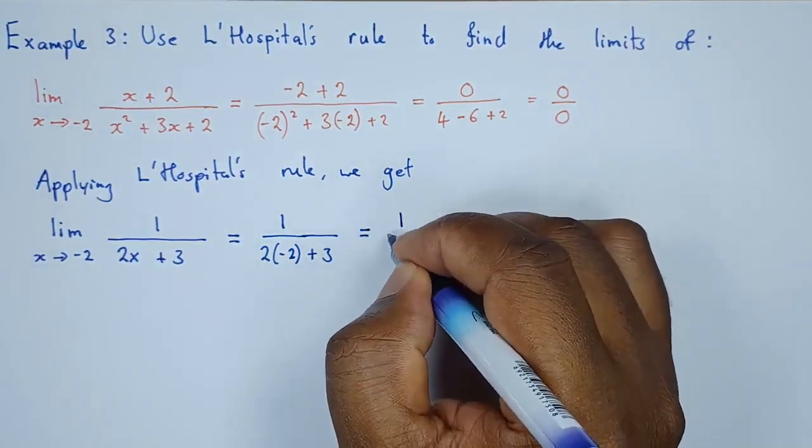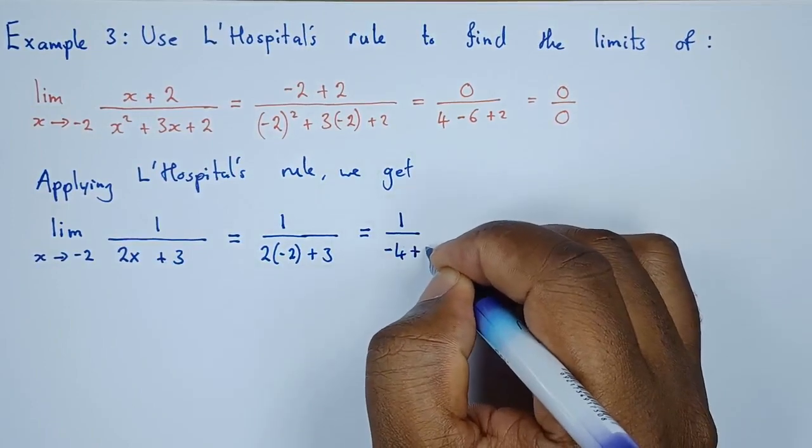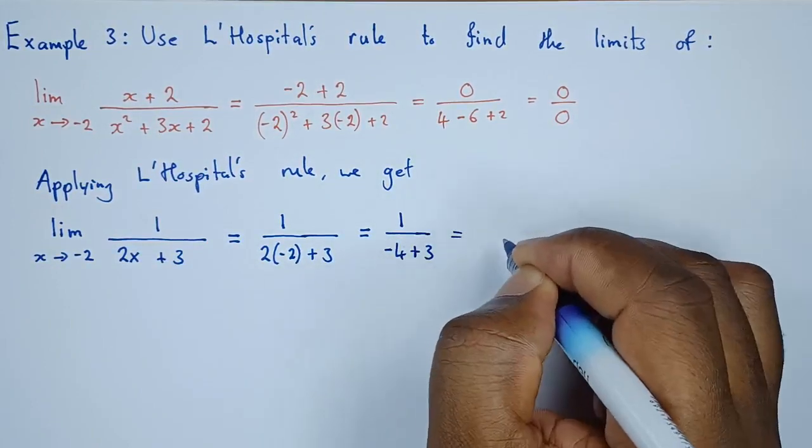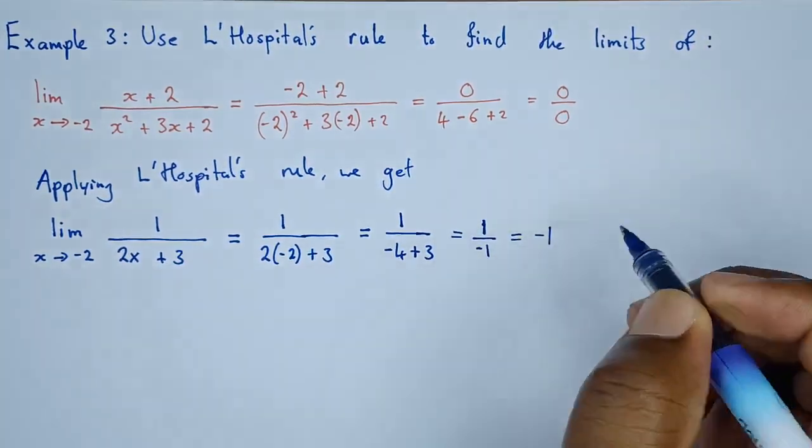What does this reduce to? 1 over negative 4 plus 3. This equals 1 divided by negative 1, and this is negative 1.